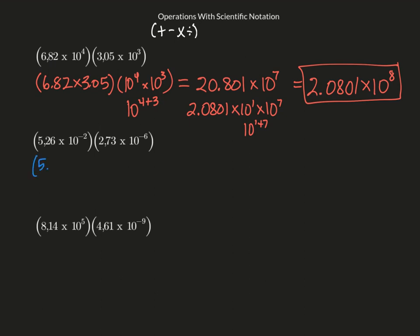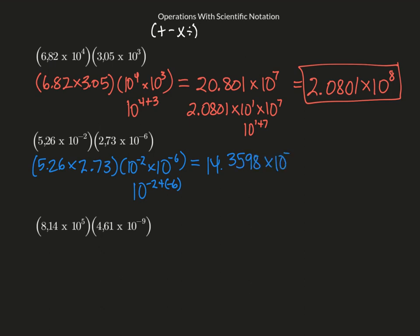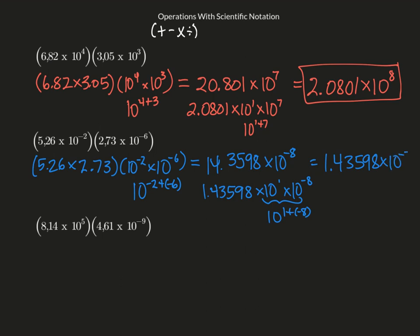I'm going to commute them so that I have 5.26 times 2.73, and 10 to the negative 2 times 10 to the negative 6. When the bases are the same, we add the exponents: negative 2 plus negative 6. Using my calculator for the first part, I get 14.3598 times 10 to the negative 8. My mantissa is not in scientific form, so I change it to 1.43598 times 10 to the first, times 10 to the negative 8. Adding the exponents gives a final answer of 1.43598 times 10 to the negative 7.